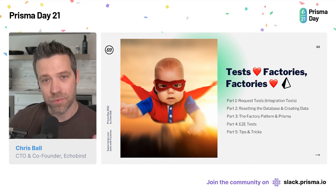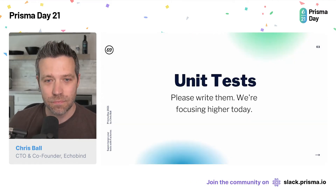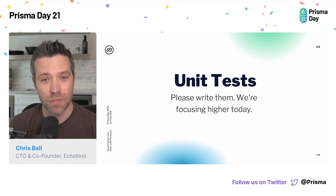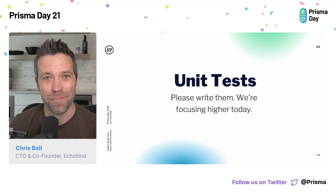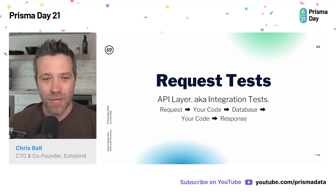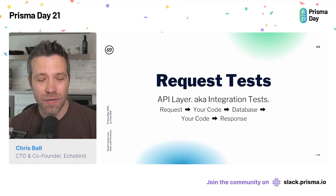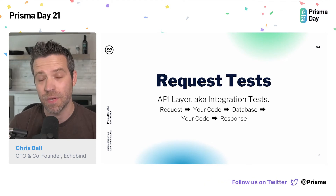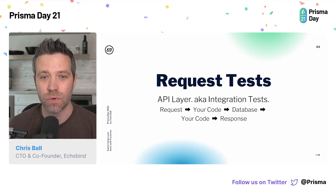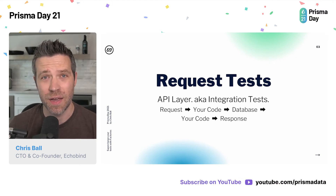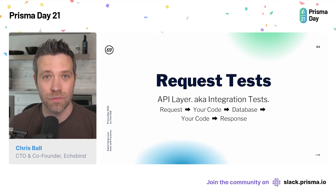Let's talk through some of our testing types. Unit tests are great, they're important, please write them — we are not going to be talking about that. In this request test — these can often be called integration tests — what I like to think of is almost like an end-to-end test but for the API layer only. The important part about integration tests or request tests is that you're actually using a live database. You're not mocking things out, you're actually using live data.